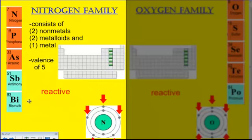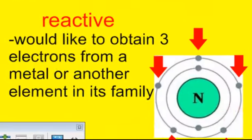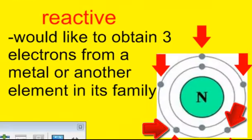These elements are going to want to obtain electrons. It requires too much energy to remove five valence, so they're going to seek three valence to obtain their full outer set of eight.